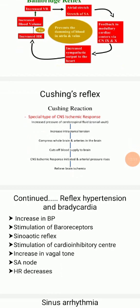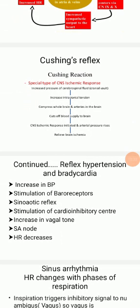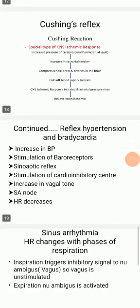The increased blood pressure stimulates the baroreceptors, and through the sino-aortic reflex, it stimulates the cardioinhibitory center. The cardioinhibitory center increases vagal activity on the SA node, so the heart rate decreases. The response to Cushing's reflex is: increase in intracranial pressure leads to a decrease in heart rate. Primarily the heart rate may increase, but the final effect is decrease in the heart rate.